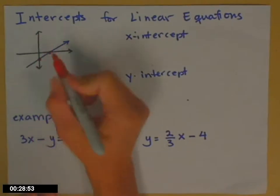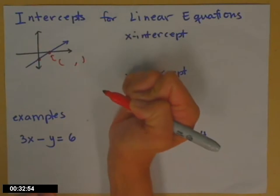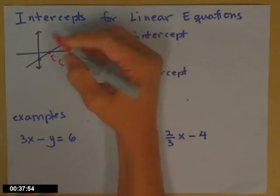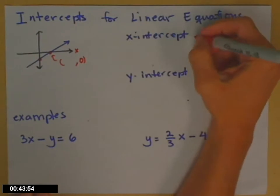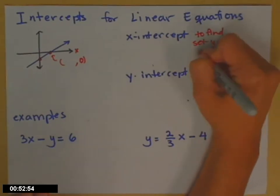What you'll notice about the x-intercept, is even if you don't know what the x-value is for that point, you know what the y-value is, because you're on the x-axis. Remember, the x is the horizontal one. We haven't gone up or down, so the y part is 0. So when you go to look for an x-intercept, the way you find it, is you set y equal to 0, and then you solve for x.